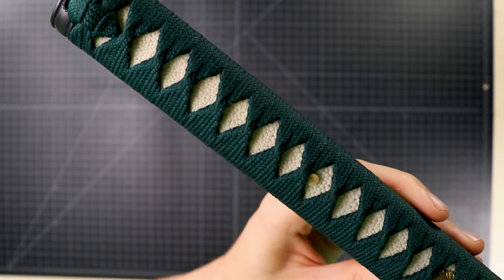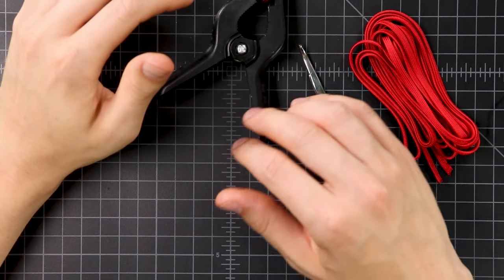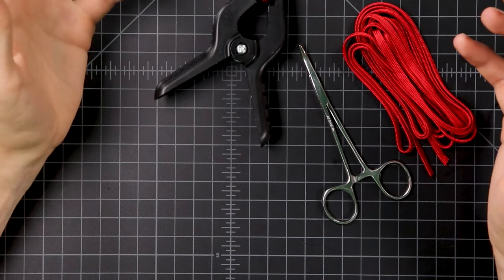So traditionally the ito or wrap that was used was made out of cotton or silk, but today we're gonna be using coreless paracord. It's a little bit smaller, but it's gonna work just fine.